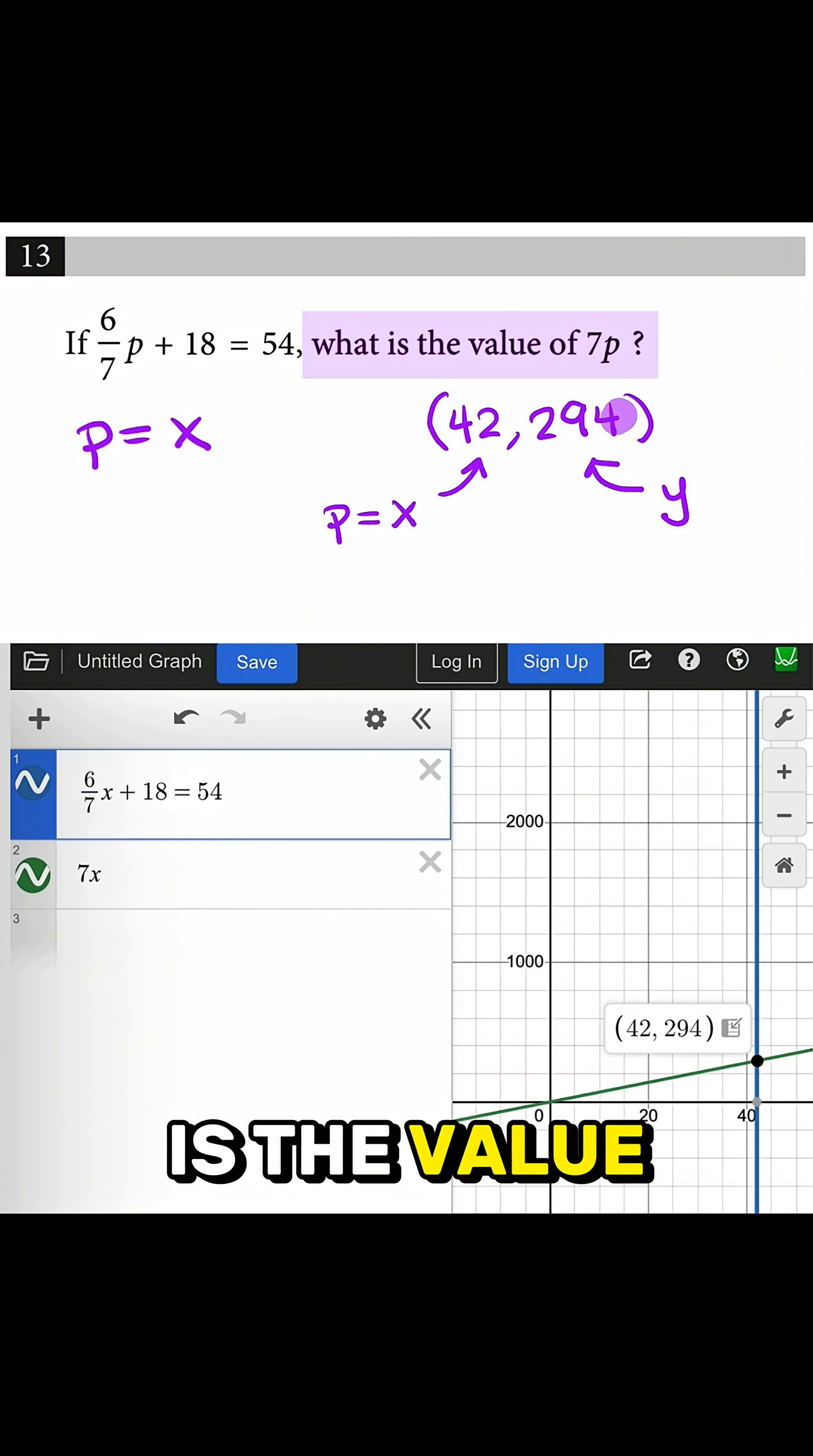42 is the value of p, not the value of 7p. So to be clear, the value of 7p is 294.